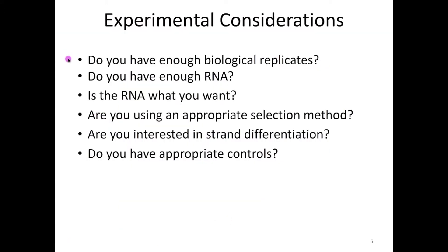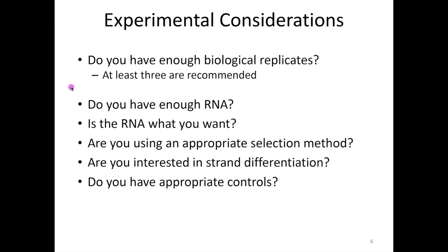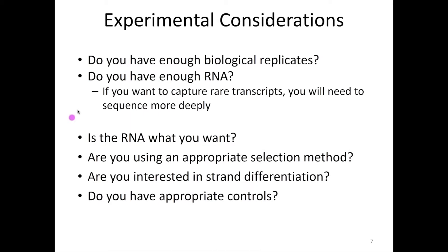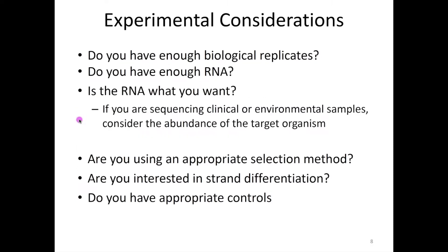When doing these experiments, there are always considerations to think about. First, do you have enough biological replicates? We always recommend at least three — if you can afford more, great, but three is a minimum. Do you have enough mRNA? If you want to capture rare transcripts, you need to sequence more deeply. If you're only interested in very common events, you don't need to sequence as much. Also, is the RNA what you want? If you're sequencing clinical or environmental samples where you might have other organisms — from a biopsy with host, or an infected mosquito with parasite — you need to consider the abundance of the organism you're looking at relative to others.